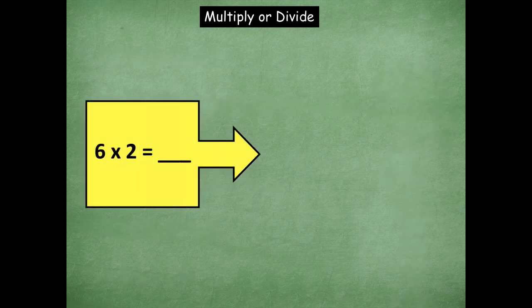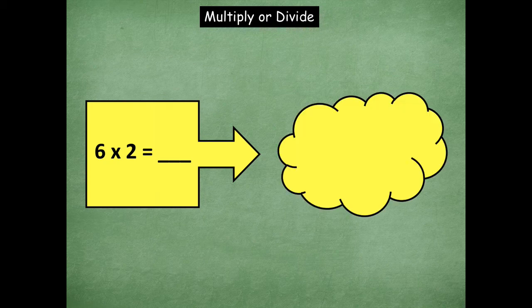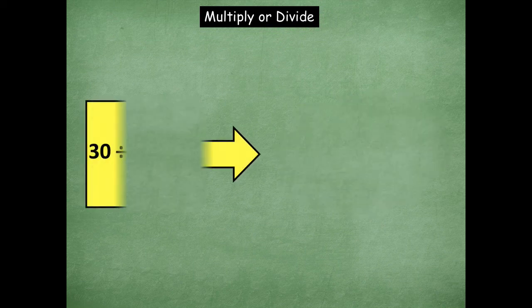Okay. So here we go. So 6 times 2, start off with a little bit easier one. So you would say 6 times 2 equals 12. All right.